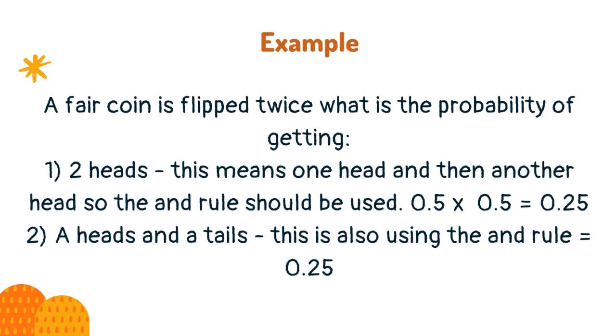A fair coin is flipped twice. What is the probability of getting two heads? This means one head and then another head, so the and rule should be used. 0.5 × 0.5 = 0.25.